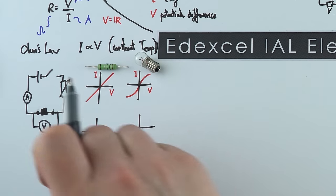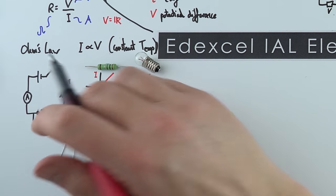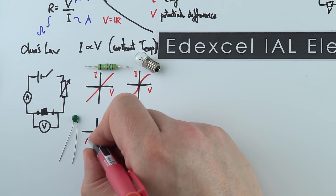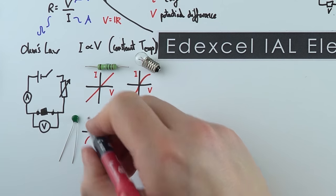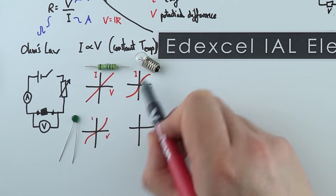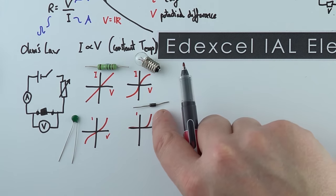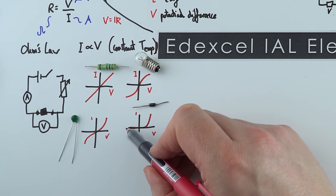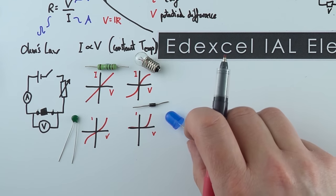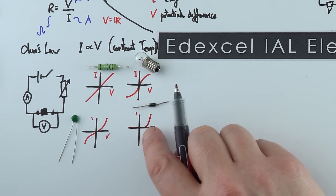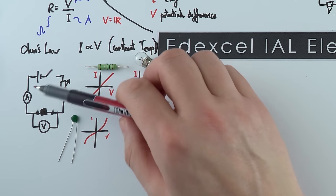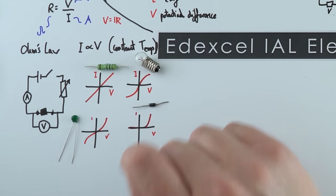For a thermistor: greater current makes it hotter, but higher temperature decreases its resistance, giving a curve with an increasing gradient — steeper as current increases, unlike the filament lamp which flattens. For a diode: in one direction no current flows, but above a certain potential difference current is allowed to flow. LEDs are light-emitting diodes but normal diodes have the same properties. You should be able to recognise these I-V characteristic shapes.